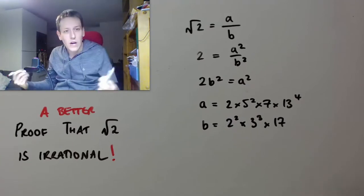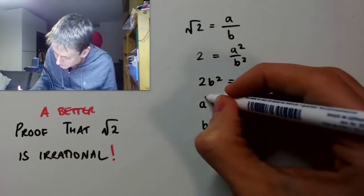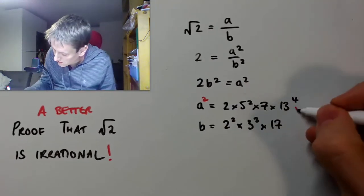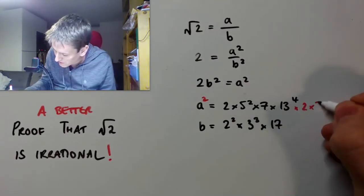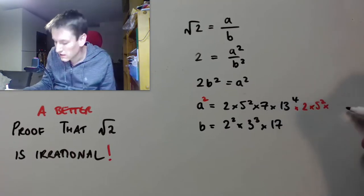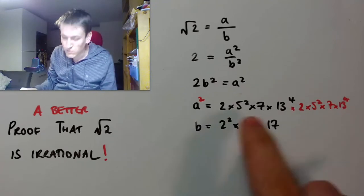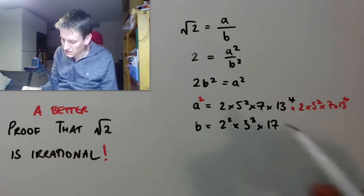Okay, now, what happens when I square these numbers? Well, if I do a squared, what this means is that I'm going to just multiply it by itself. So, I multiply it by 2 times 5 squared times 7 times 13 to the 4. But, of course, I could now write this as a single prime decomposition again.